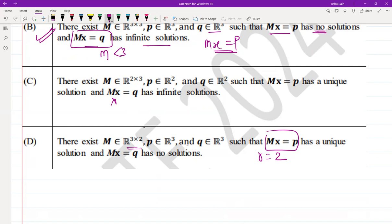But for Mx = q to have no solution, vector q must not be in the column space of M, and this makes the system inconsistent.